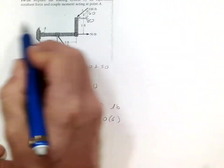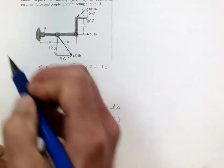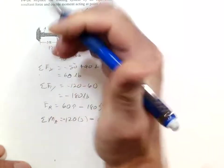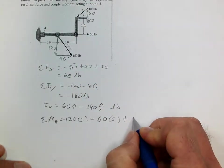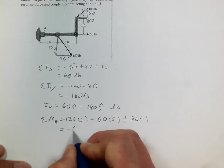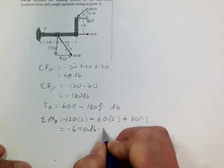Now the 80 will cause rotation in the clockwise direction. So that is positive, because the thumb would be pointed up with the right-hand rule. And so we have 80 times 1. Summing all that, we get negative 640 pound-feet.